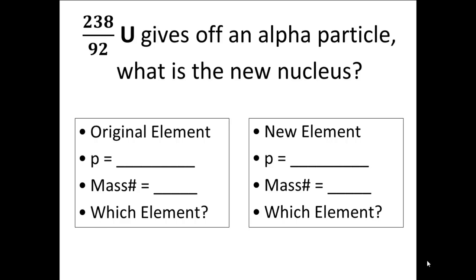Hey guys, it's Mr. Post and on today's video, we're going to work through a few nuclear decay problems. In the first problem, Uranium-238 is going to give off an alpha particle. When it gives off an alpha particle, a new nucleus is going to be formed. And the question is, what is the new nucleus?